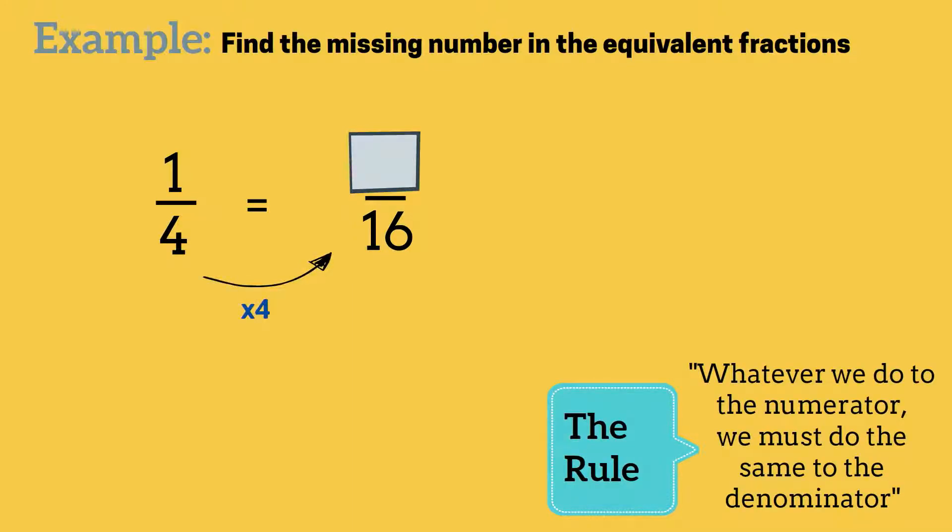So if 4 is being multiplied by 4 to give 16, then we must multiply 1 by 4 to give 4. So the missing number is 4. 1 quarter equals 4 sixteenths.